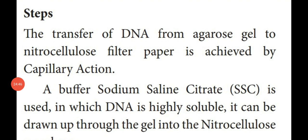Now we are going to see the steps involved in Southern blotting technique. Southern blotting is the transfer of DNA from agarose gel to nitrocellulose membrane. The transfer of DNA from agarose gel to nitrocellulose filter paper is achieved by a process known as capillary action — through minute tubular-like substances. A buffer — sodium saline citrate — is used in which DNA is highly soluble, and it is drawn up through the agarose gel into the nitrocellulose membrane.